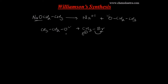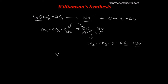The alkoxide ion, having a lone pair of electrons, acts as the nucleophilic center. Oxygen donates electrons to the carbon atom, resulting in O-C bond formation. This gives us CH₃CH₂-O-CH₃ as the product. The bromide ion Br⁻ is released, and in the last step, the free Na⁺ ion combines with Br⁻ to give NaBr as a byproduct.